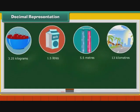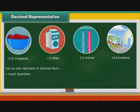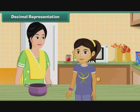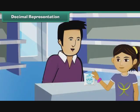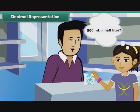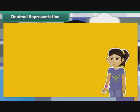Decimal Representation. In real life, we use decimals extensively to express quantities and lengths. Let us now represent in decimal form: liquid quantities, solid quantities, and lengths. Savita's mother asked her to get a half litre milk pouch from Mother Dairy. When she went to buy it, the person at the booth handed her a 500 ml pouch. Savita was confused. Is 500 ml the same as half a litre? To be able to answer this question, we must first understand the units used to measure liquids.